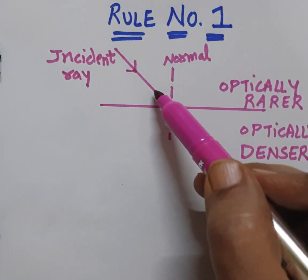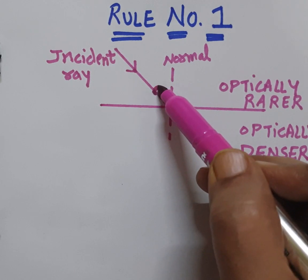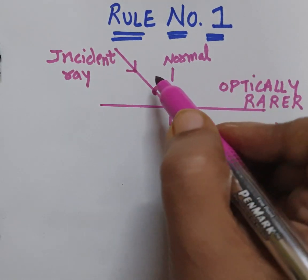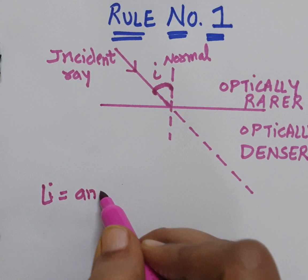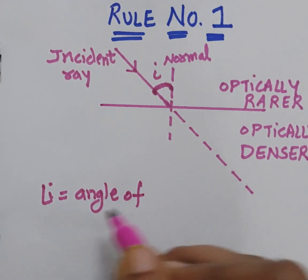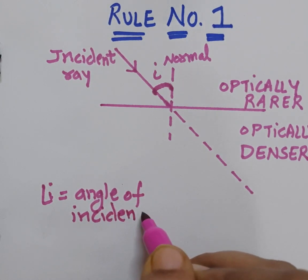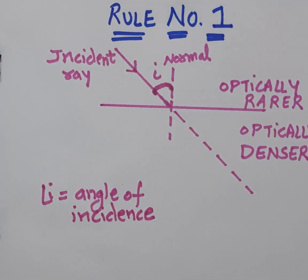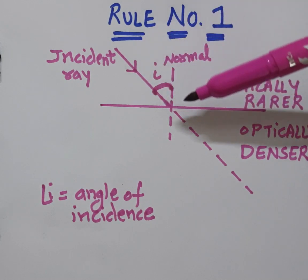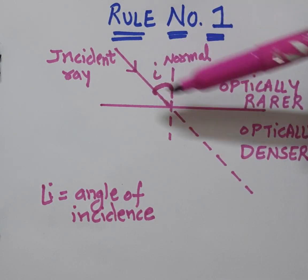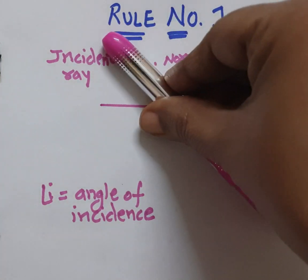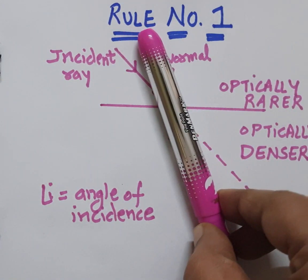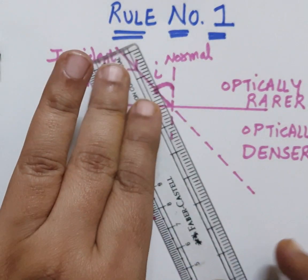The angle between the incident ray and the normal is called the angle of incidence, represented as angle i. Rule number one says that when the ray of light is traveling from optically rarer medium to optically denser medium, it will not go straight — it will undergo refraction and bend towards the normal, meaning it will move closer to the normal.